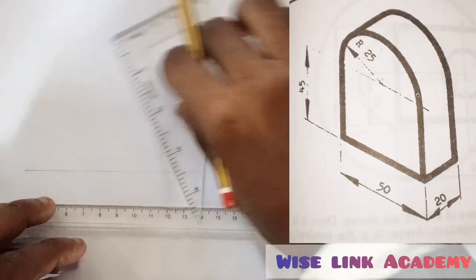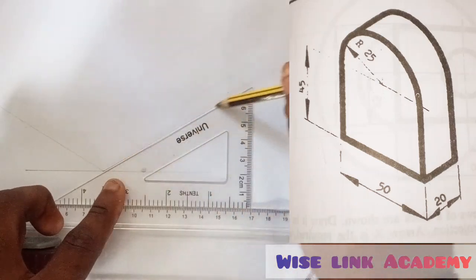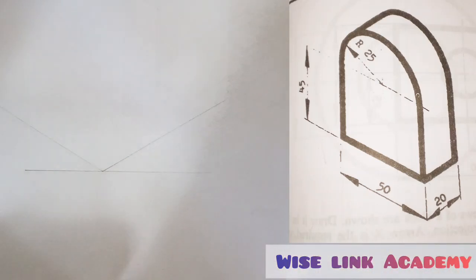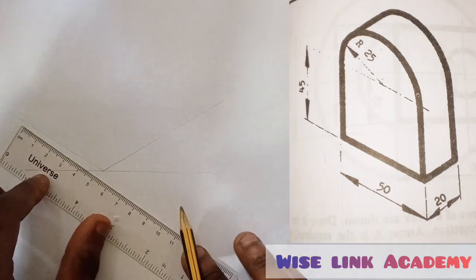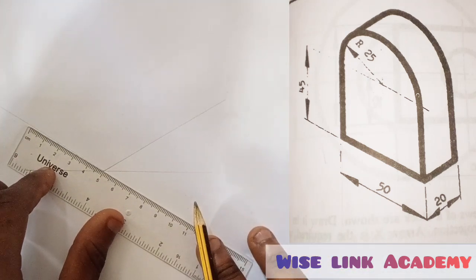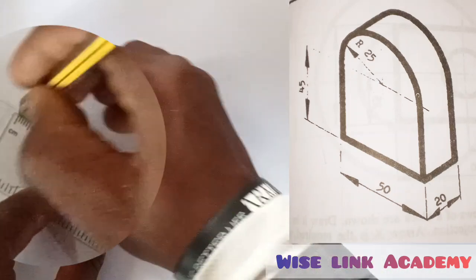One goes this way while the other goes this way. My length is going to be 50, so from this point here to somewhere here is 50. The breadth is going to be 20.